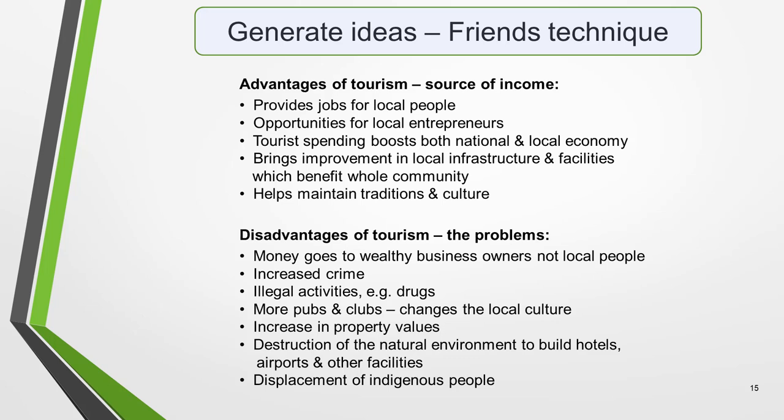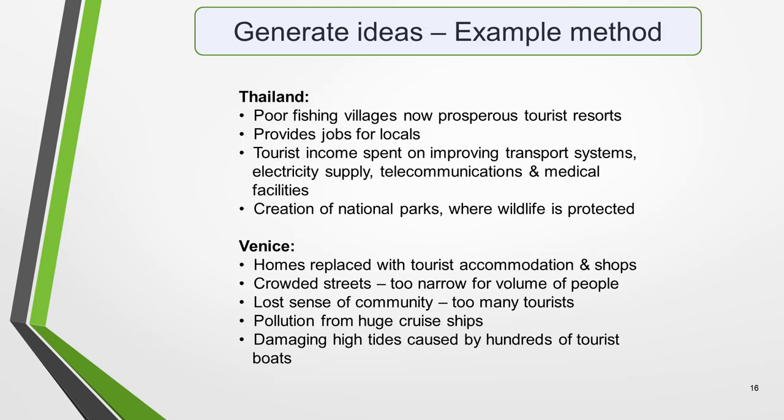Here are my ideas using the friends technique. There are far too many ideas here to include in an essay of just over 250 words. Think up a few, then pick one advantage and one disadvantage that you think you can develop well. Pause the video and read through my ideas. With the example method, on the other hand, you start by thinking of specific examples related to the question. They can come from your own experience or be something you've heard or read about. These examples will generate ideas that will become the main points of your essay. It works particularly well for the model question I've selected for this lesson. Here are my ideas using the example technique. Again pause the video and read through them.